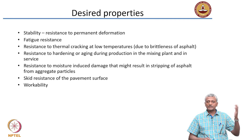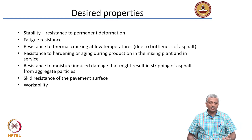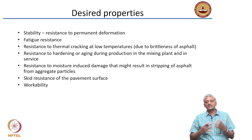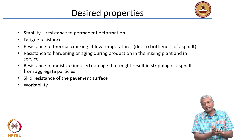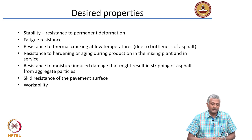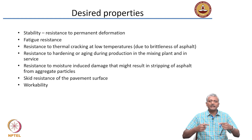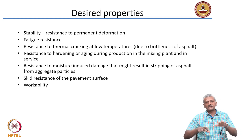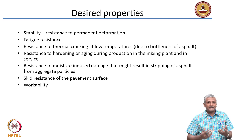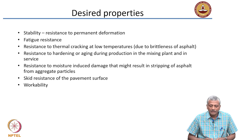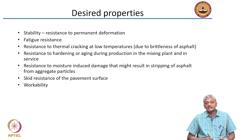The desired properties of asphalt concrete include stability — resistance to permanent deformation — which is especially important because asphalt is a viscous material that will continue to flow under sustained loading. Fatigue resistance is also critical because highways carry continuously dynamic loads, and the pavement must withstand many load cycles. Low-temperature thermal cracking resistance is very important as well, since polymers become brittle and start cracking at low temperatures.